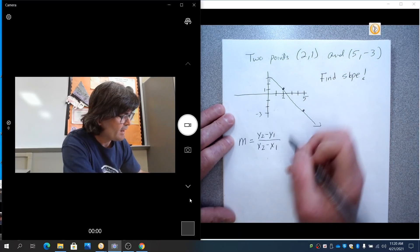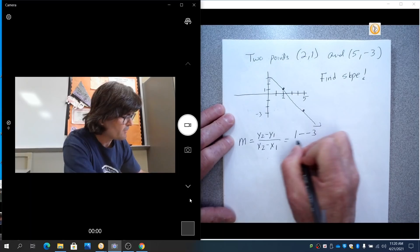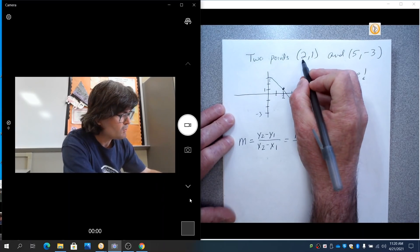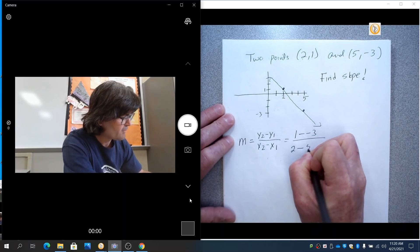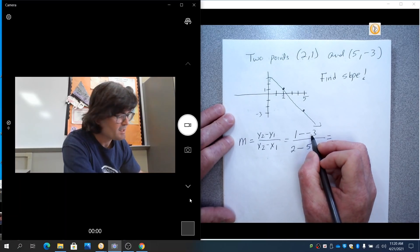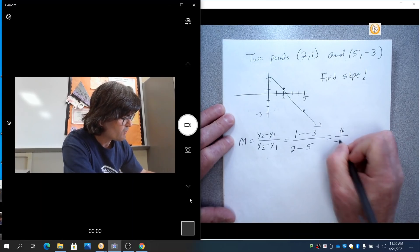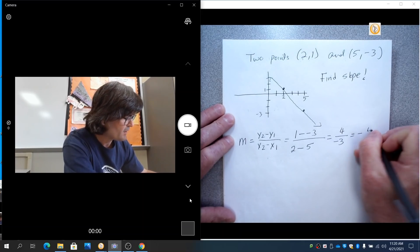So if I pick 1 to go first, 1 minus negative 3, then I have to start out with 2 minus 5. So this is going to be 1 minus a minus is a plus. So that makes me a 4 over 2 minus 5 is negative 3. So my slope here is minus 4 thirds.